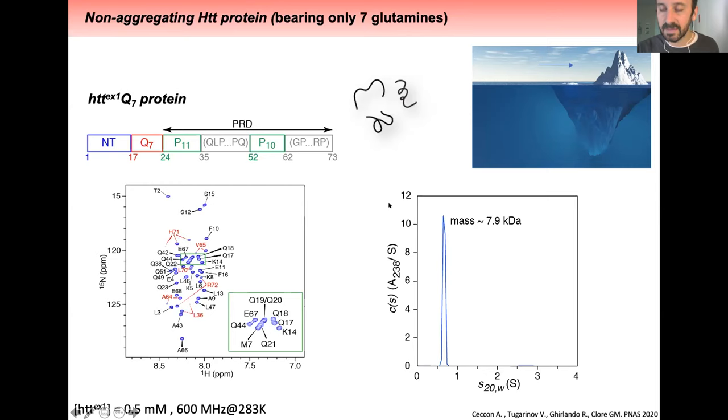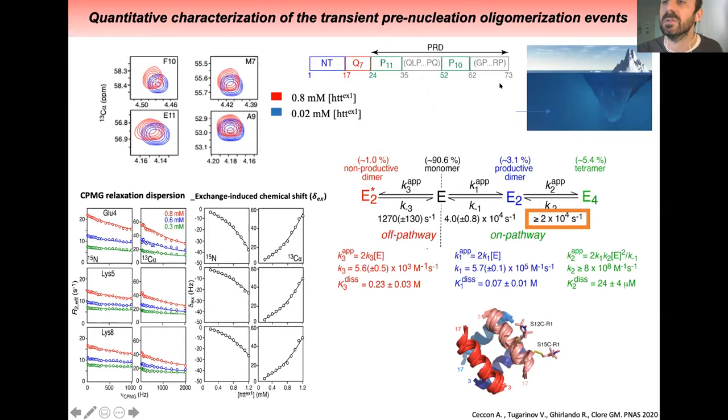The proline-rich domain has two polyproline stretches, one with 11 and one with 10 prolines. Looking at the HSQC, it's clearly an IDP protein with small dispersion and mechanical shift on protons. AUC experiments clearly showed we only have a monomer, but when we performed concentration-dependent experiments from 0.8 millimolar to 20 micromolar, we started observing some shifts.